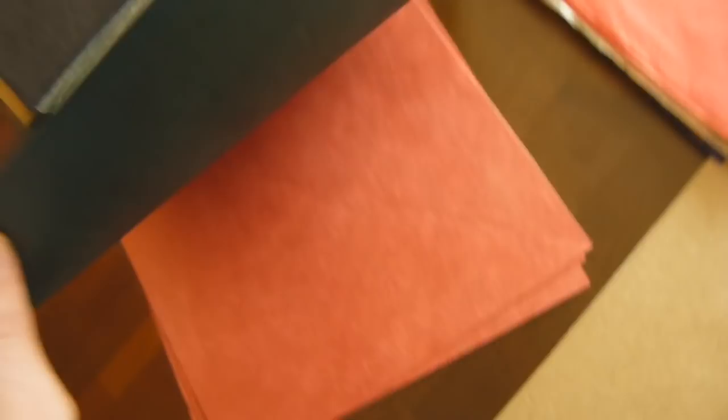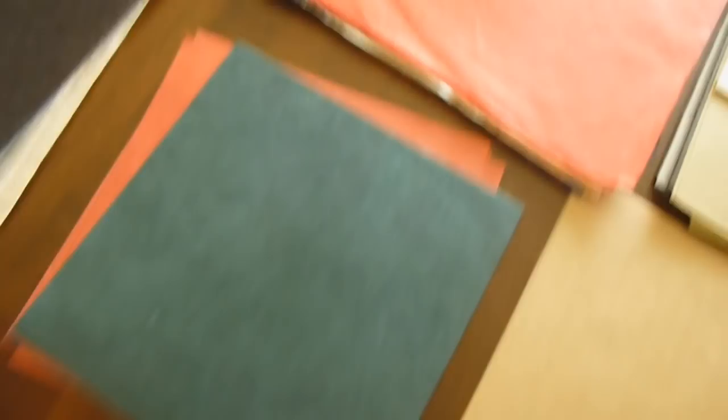This one is Lokta paper, 40cm square, green obviously. I've only used it once, but I actually don't like it to be honest. It doesn't hold the creases well. It looks fluffy when you start to shape it. Like if you're doing an insect with this and you shape the leg really thin, they'll look really fluffy on the outside. I'm not a fan of Lokta.